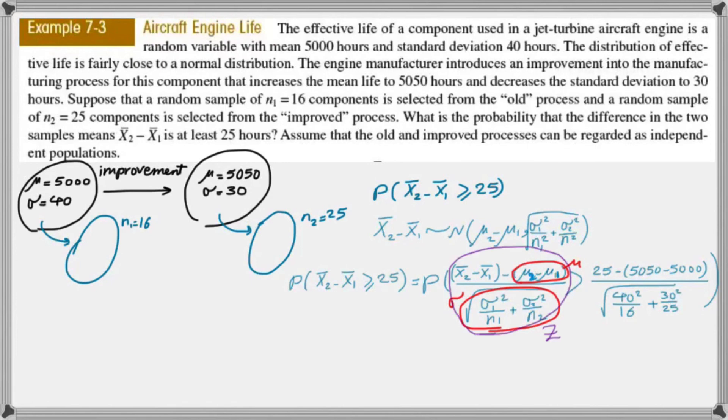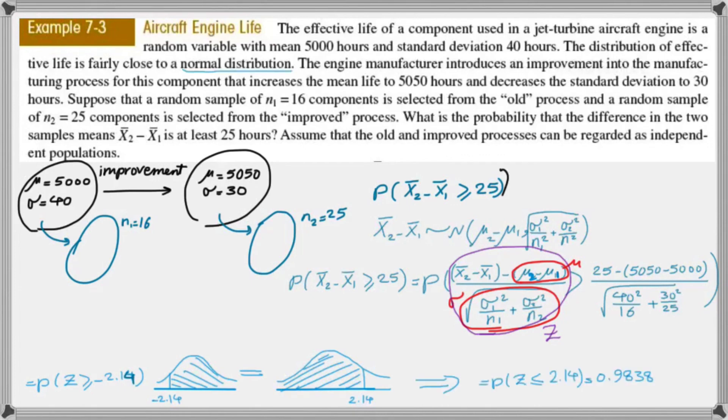So if you do so, the term that you get on the left-hand side is z. On the right-hand side, you get negative 2.14. So basically, you're trying to find what is the probability that z is greater than negative 2.14. That is shown on the graph that what area you're looking for. I know that the normal distribution is symmetric, so that area is exactly the same as the area before 2.14. So therefore, I can find what is the probability that z is less than 2.14, which is 0.9838.